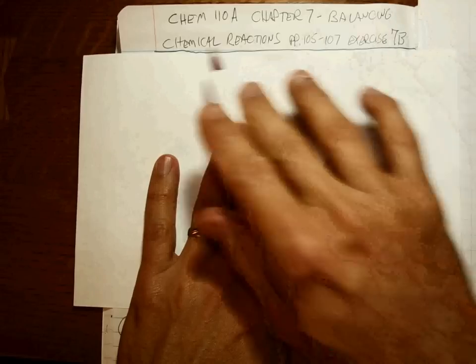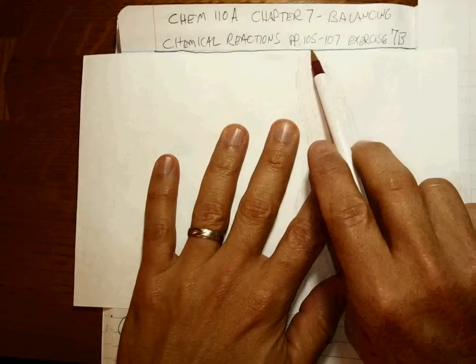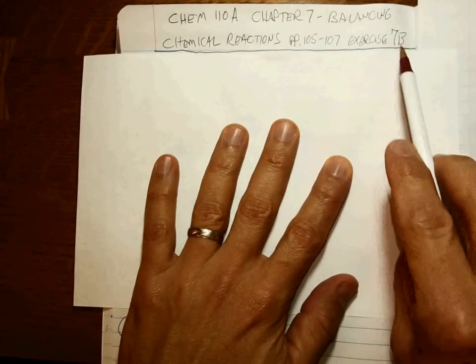Okay, Chapter 7, Balancing Chemical Reactions. It's pages 105 through 107, exercise 7b.